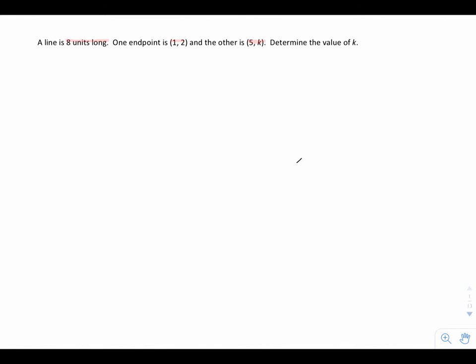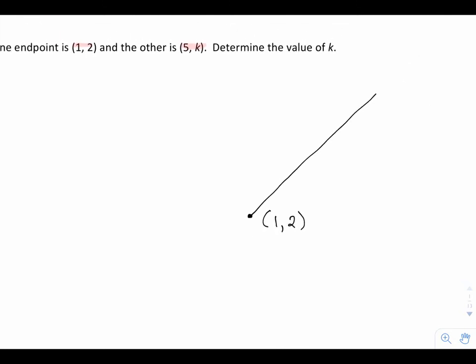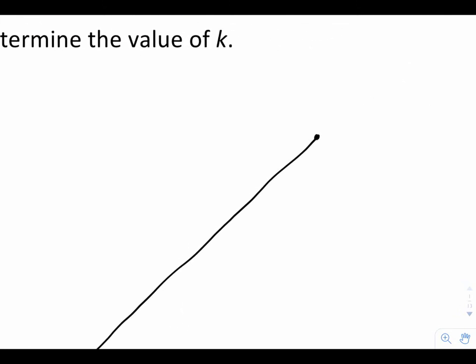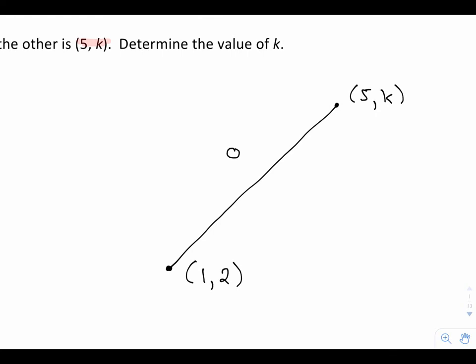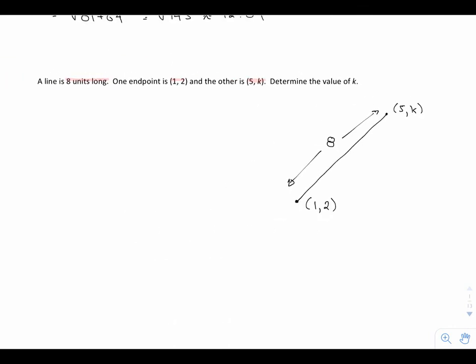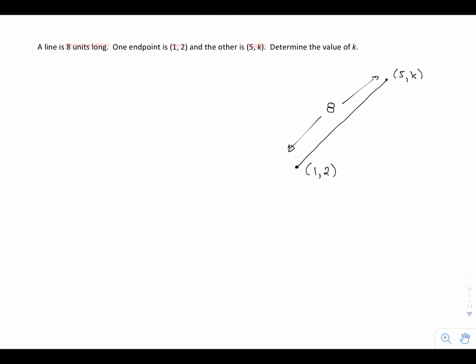So if I were to draw a diagram, what I know is that one endpoint is (1,2). My other endpoint is (5,k), and the length of this line is 8 units long. It doesn't matter the units, we'll just say 8.